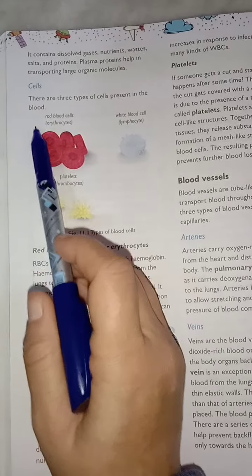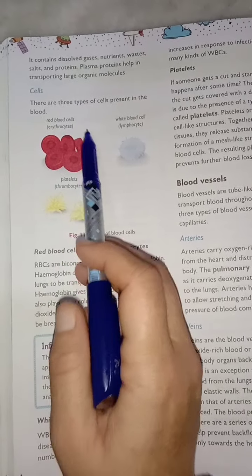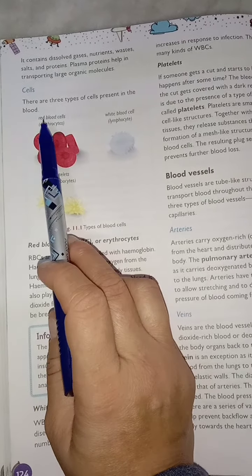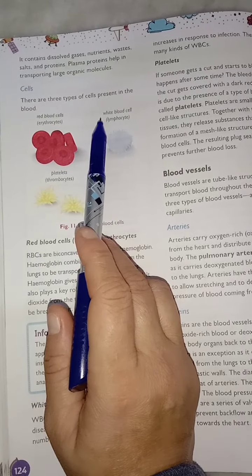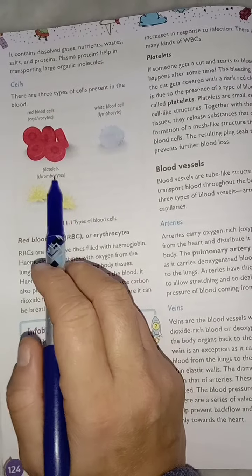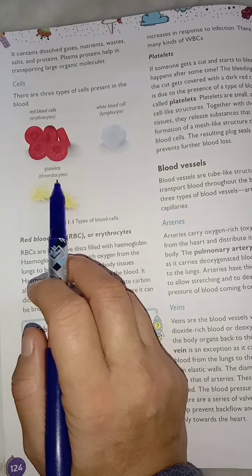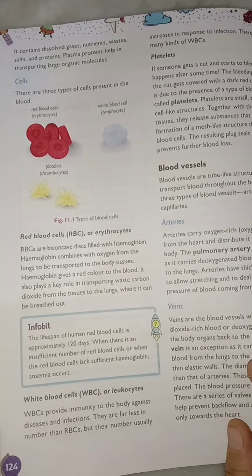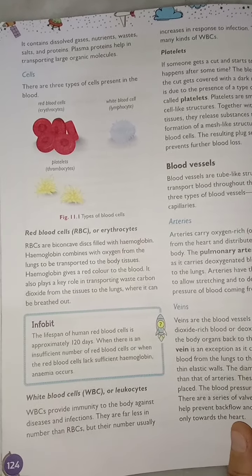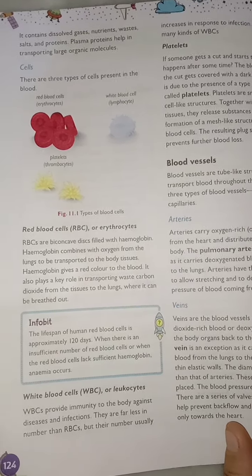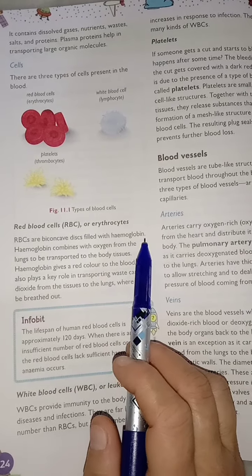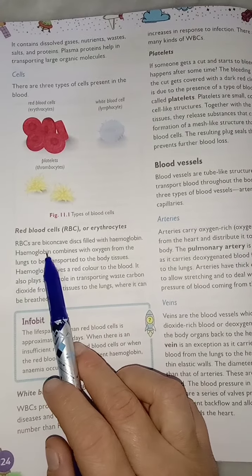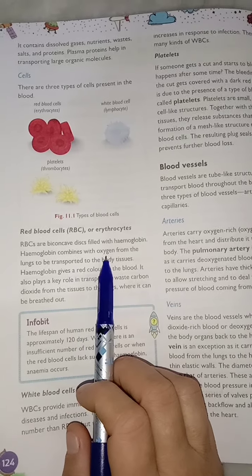There are three types of cells present in blood: RBC (red blood cells), WBC (white blood cells), and platelets, also called thrombocytes. RBCs, also called erythrocytes, are mainly biconcave disc-shaped and contain haemoglobin. Haemoglobin combines with oxygen from the lungs and transports it to the body tissues. Haemoglobin gives the red colour to the blood.